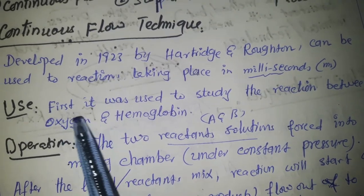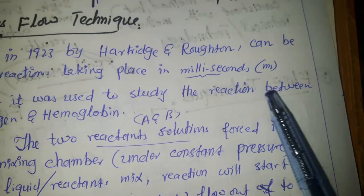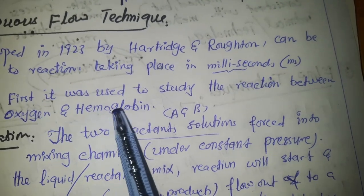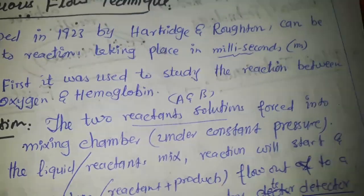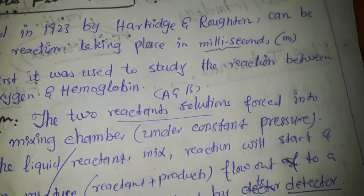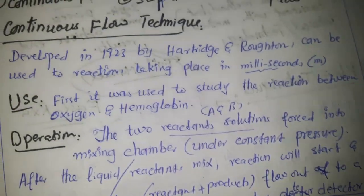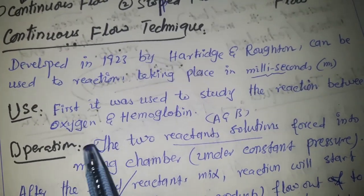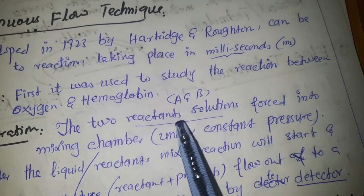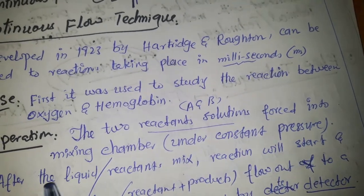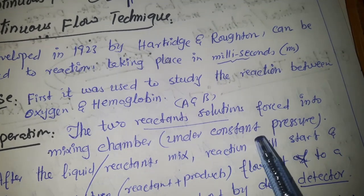The continuous flow technique was developed in 1923 by Hartridge and Roughton and can be used to study reactions taking place in quite short periods of time — that is, in the millisecond range. This was first used to study the reaction between oxygen and hemoglobin, and later it was applied to several other reactions, including gas-phase reactions, though it requires a large volume of sample.